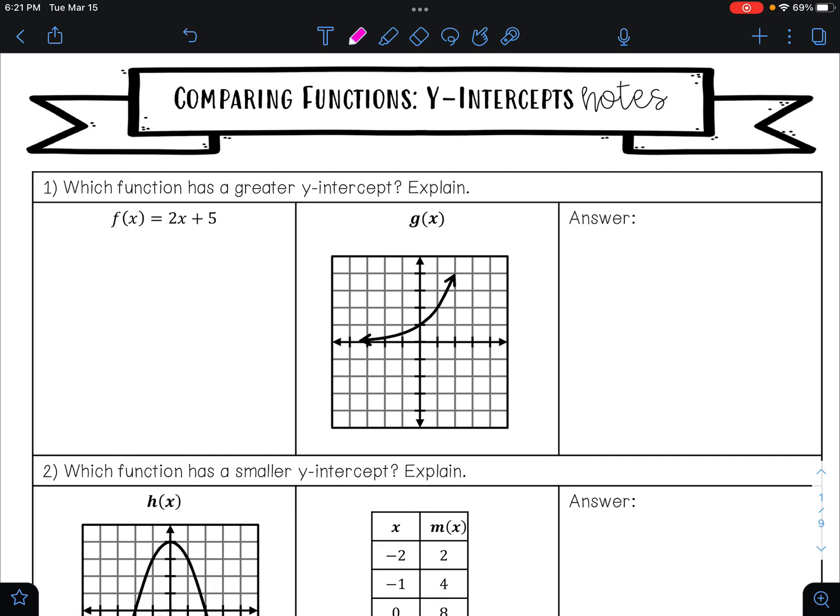On example one, it says which function has a greater y-intercept? Explain. So we have f(x) equals 2x plus 5. This is a linear function.